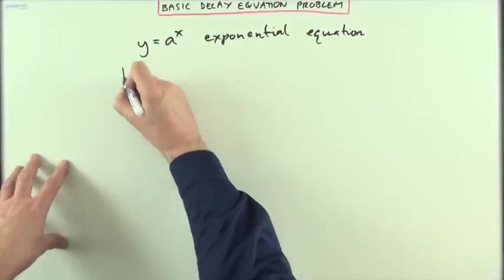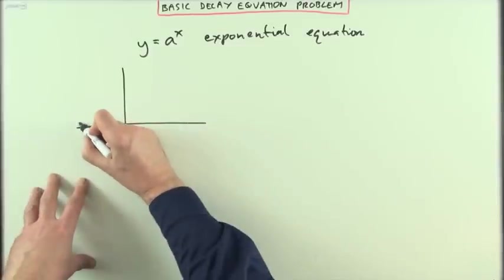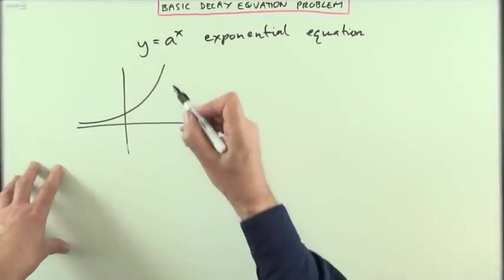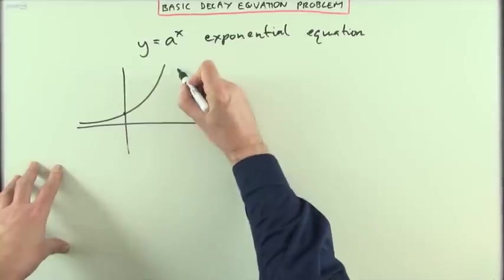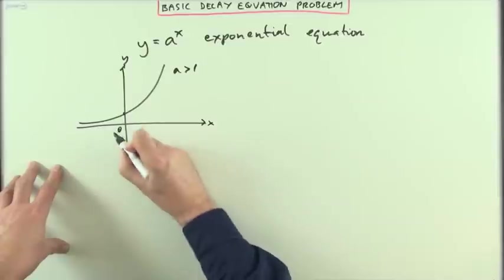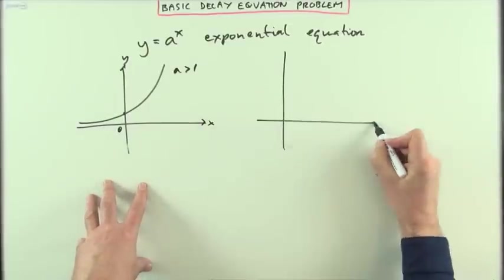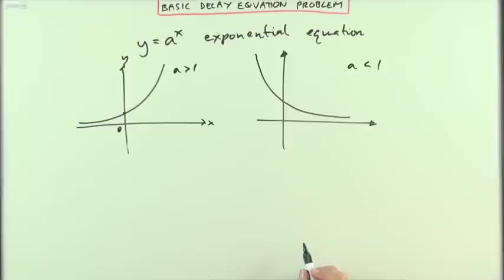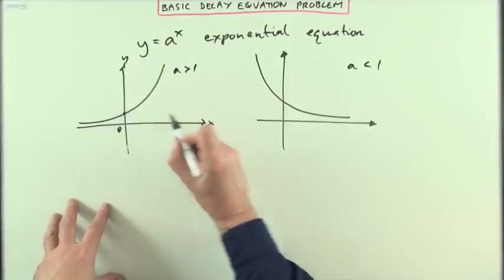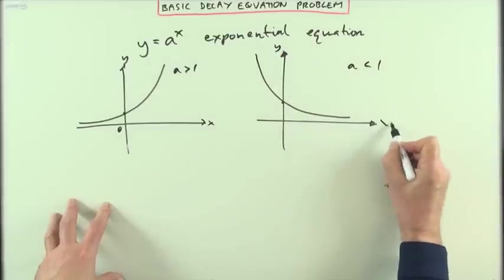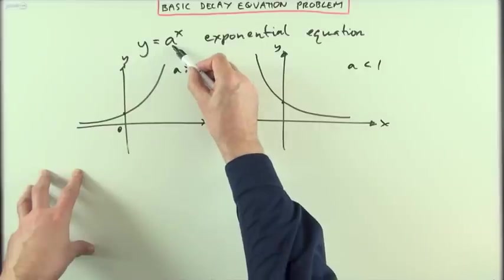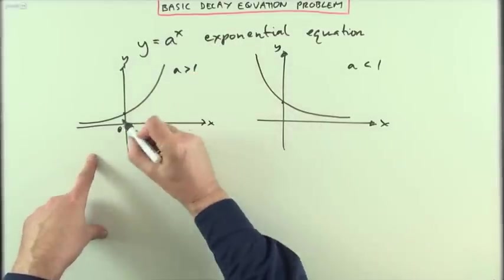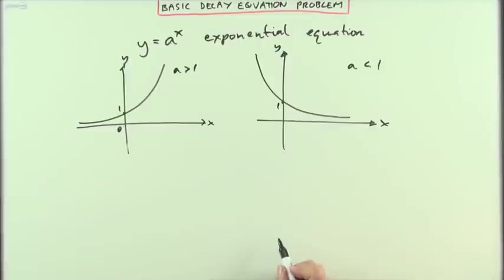The graph would look either like this if a was a number greater than 1, or like this if a was less than 1. In both cases, the graph would intersect the y-axis at 1, because anything to the power 0, when x is 0 on the y-axis, is 1. So both of these graphs intersect at 1.